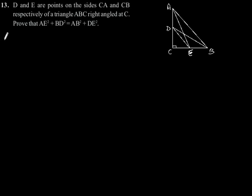Exercise 6.5, question number 13. D and E are the points on the sides CA and CB respectively of a triangle ABC, right-angled at C. Prove that AE square plus BD square is equal to AB square plus DE square.